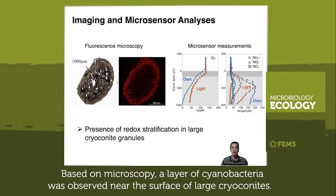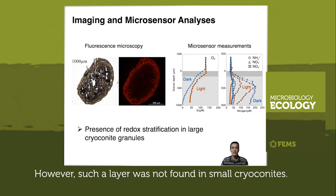Based on microscopy, a layer of cyanobacteria was observed near the surface of large cryoconites. However, such a layer was not found in small cryoconites.